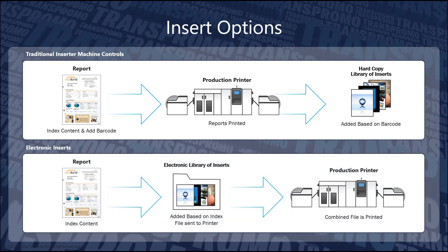The second method is to have electronic inserts added as part of the data stream so they are printed inline with the original data. Based on information obtained about each mail piece, the electronic inserts are selected and added to the output. The inserts can have different content on the front and back, and additional information can be included on them that's been extracted from the print file or obtained from external sources.